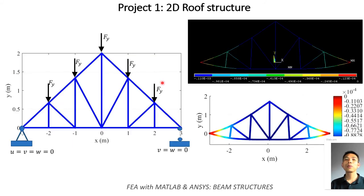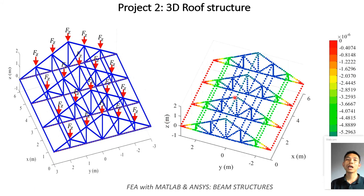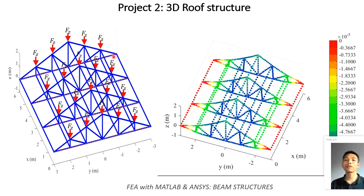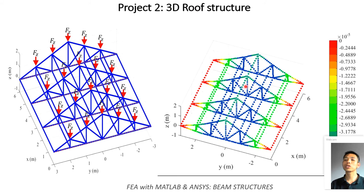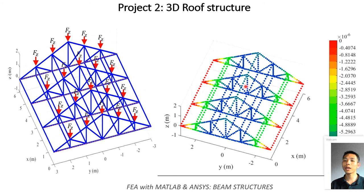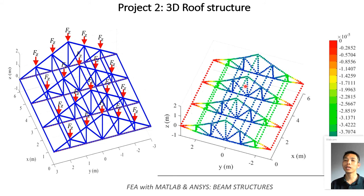After that, we will go to Project Number One — a 2D group structure. We will conduct ANSYS simulations, write FEM code, and make comparisons between them. After that, we will go to Project Number Two, a 3D group structure. We will learn how to write FEM code in MATLAB, write the ANSYS input file, run simulations in ANSYS, and make comparisons between the two.